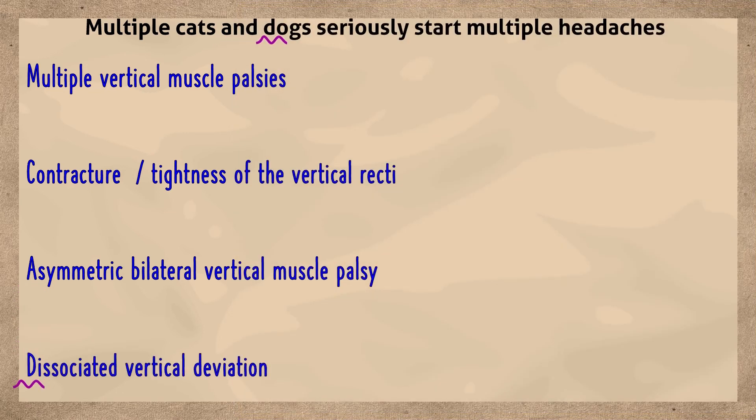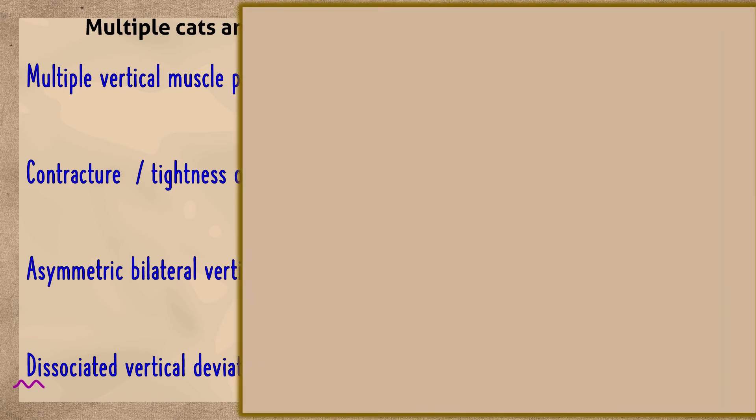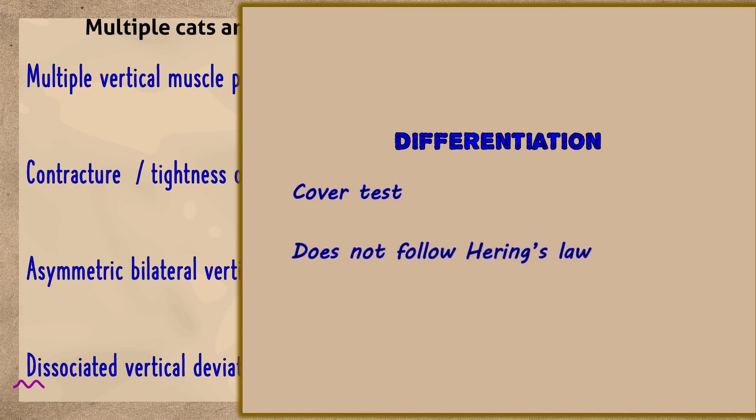Dissociated vertical deviation in one eye may mimic a contralateral superior rectus paresis by the 3-step test. To avoid erroneous diagnosis of a DVD, one must assess the hypertropia by a cover test rather than by light reflex alone. On cover test, the deviation will be found not to follow Hering's law.